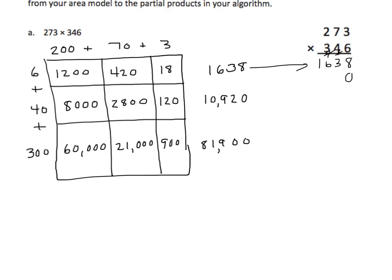I multiply four times three and I get twelve. I regroup my one right here. And now I multiply four times seven — I get twenty-eight plus one is twenty-nine. Regroup my two here. And four times two is eight, plus two is ten. So we can see a match here as well.